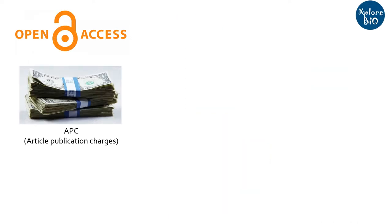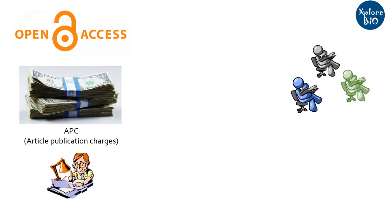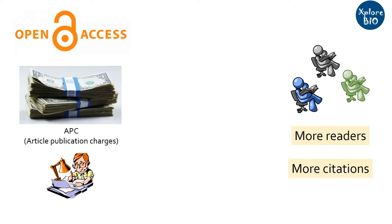Open access journals are journals that charge money in the form of article processing charges, or APCs, from the authors for publishing the article. Readers can access it anytime without paying any money or subscription charges. Due to this reason, papers published in open access journals are often read more and thus have a higher probability of getting cited.